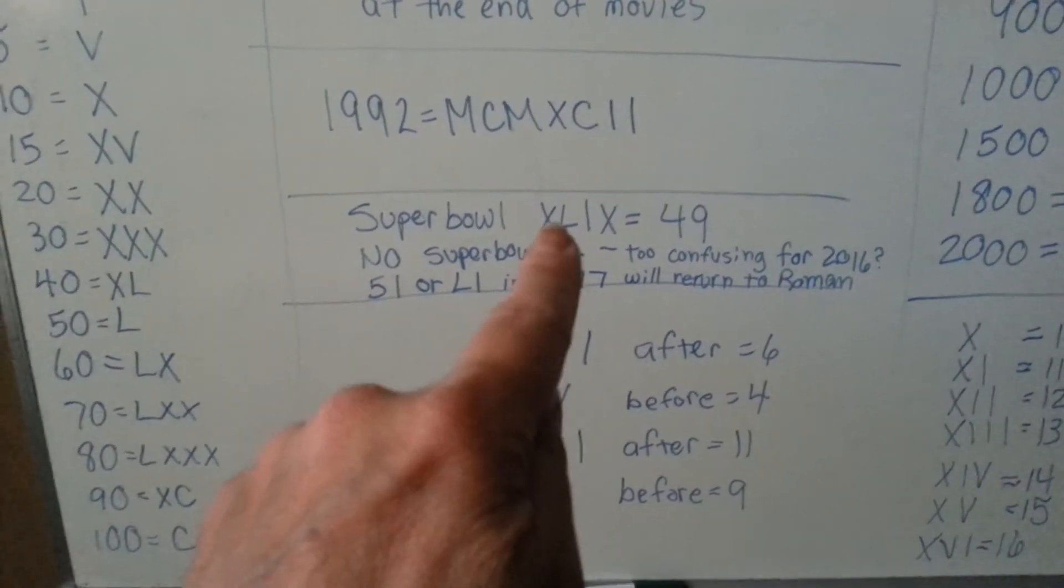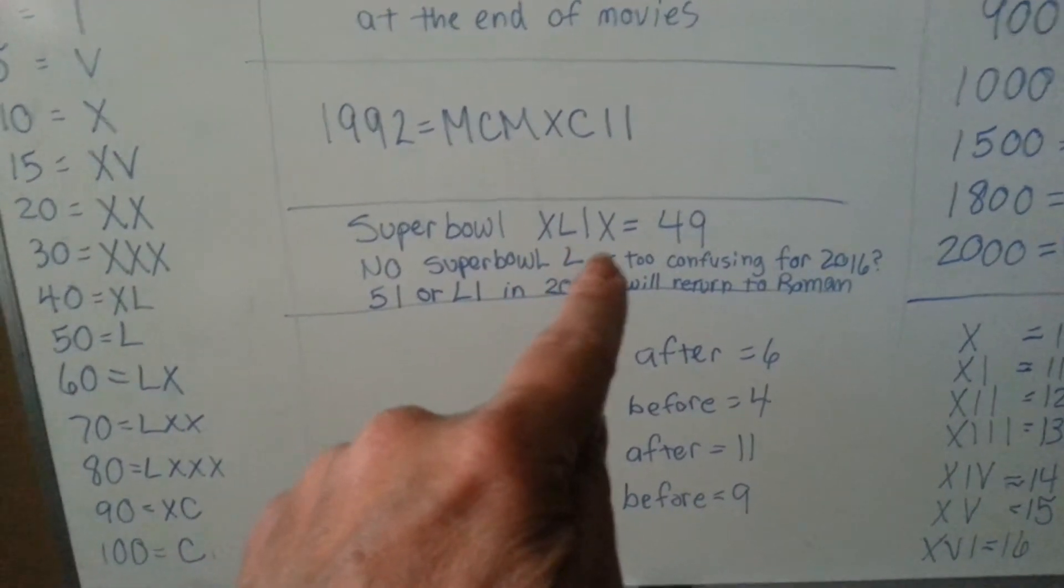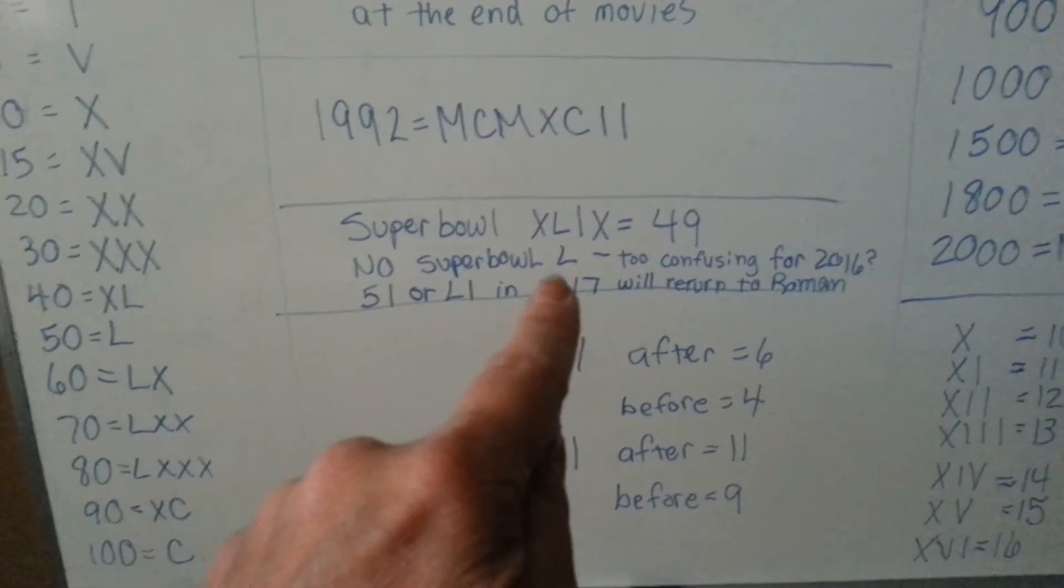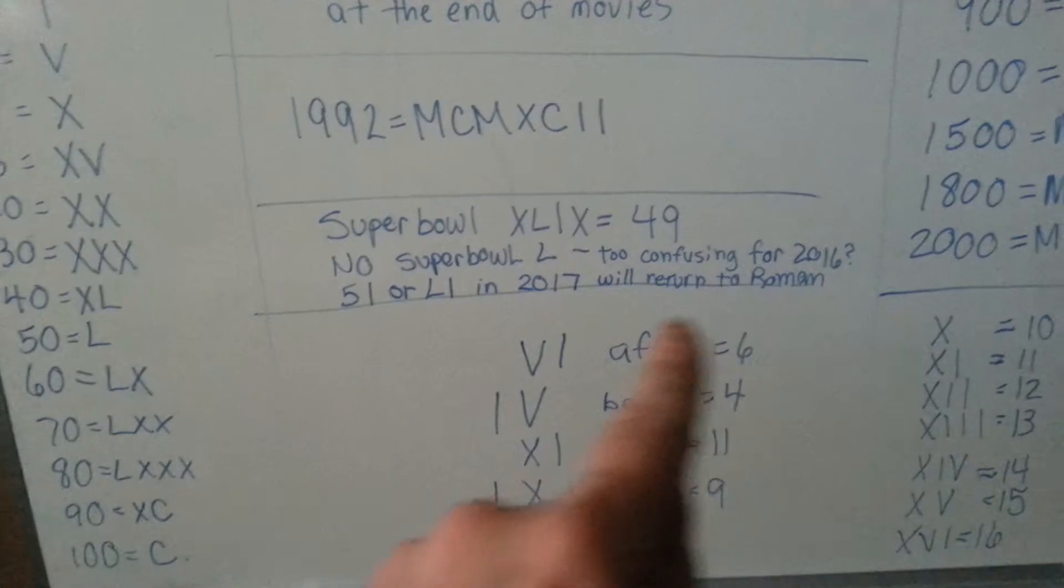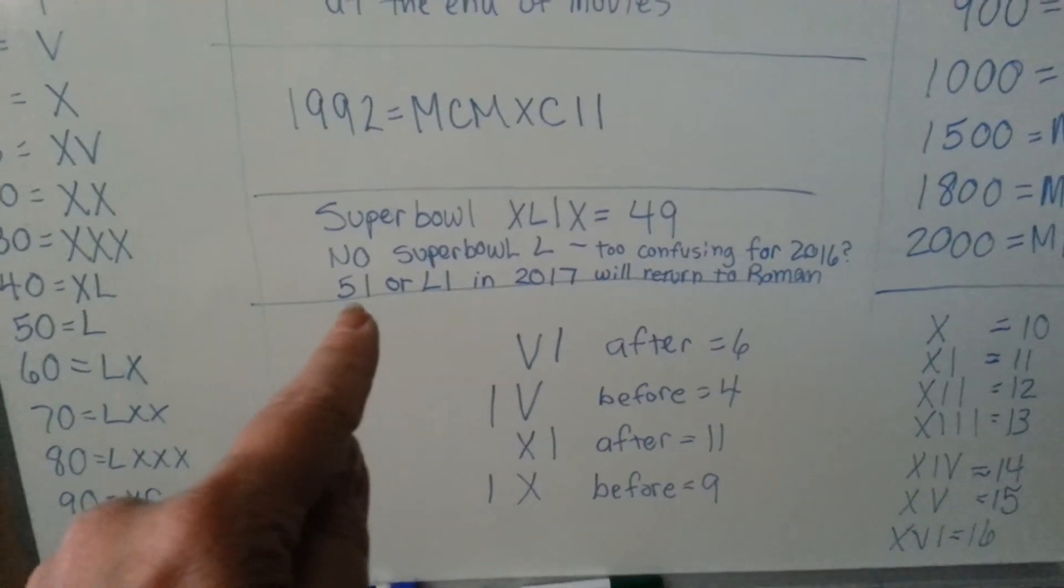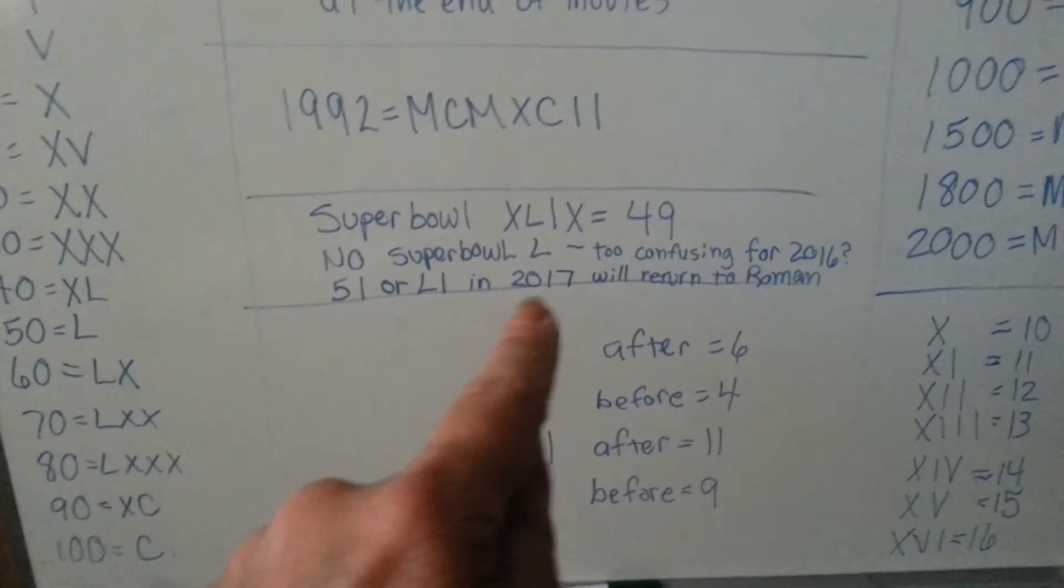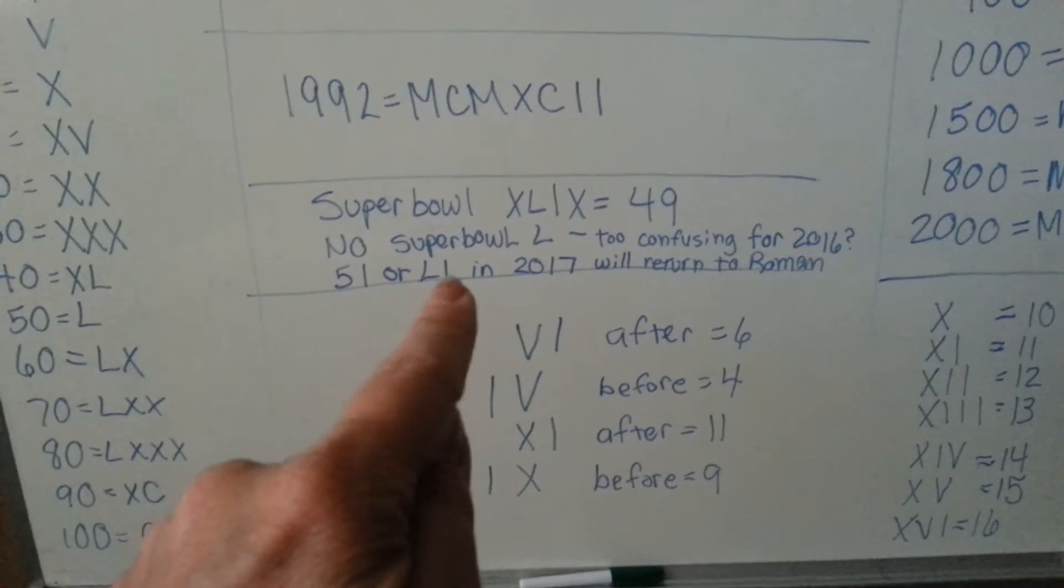Super Bowl 49 is written as XLIX, but there's no Super Bowl L because they said they thought it would be too confusing for 2016. They're going to go back to it in 2017 and it will return to LI.